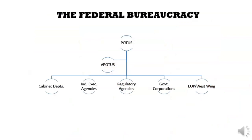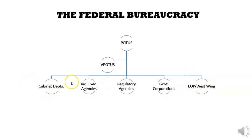The federal bureaucracy is part of the executive branch, and so the executive branch is made up of POTUS, the President of the United States, as well as the Vice President. You're going to have to know that there are five parts of the bureaucracy, listed at the very bottom of this chart. We'll go over these in particular and in specific.